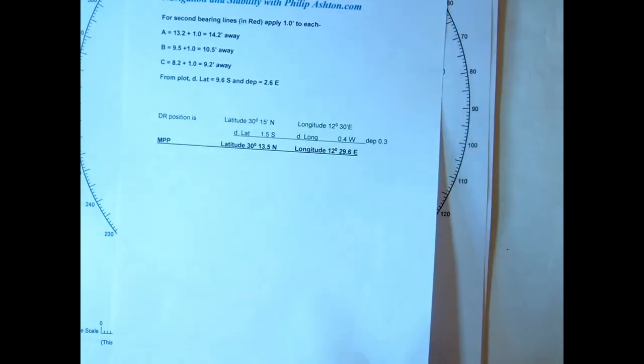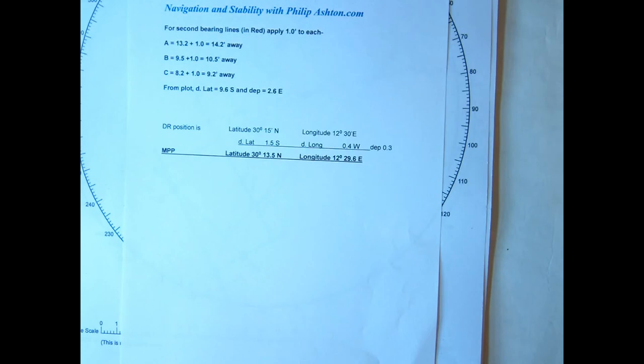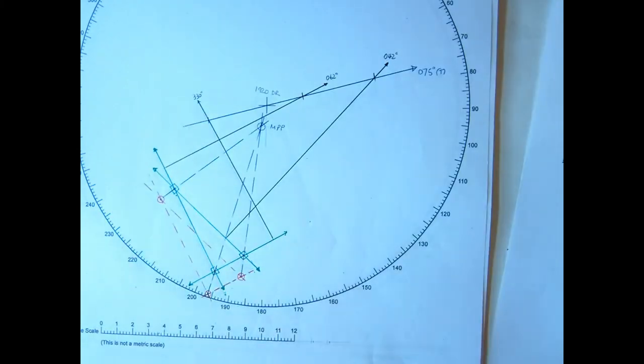So from my calculations, I got for this particular problem an MPP of 30, 30.5 and 12, 29.6 east, if you wanted to have a practice with that. So that's the situation where the plot exists outside of the cocked hat, and that's everything explained there.